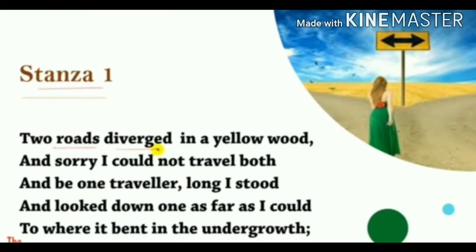Let's begin the first stanza: 'Two roads diverged in a yellow wood, And sorry I could not travel both, And be one traveller, long I stood, And looked down one as far as I could, To where it bent in the undergrowth.' This is a narrative poem because the poet is talking about his personal experience when one morning he was passing by a yellow wood.